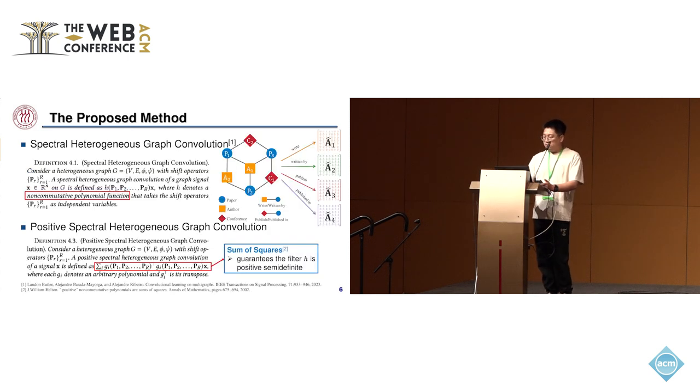To address this issue, we first define the spectral heterogeneous graph convolution as a non-commutative polynomial function of shift operators. This non-commutative polynomial function H denotes the heterogeneous graph filter, and it takes the shift operators P_1 to P_R as independent variables.